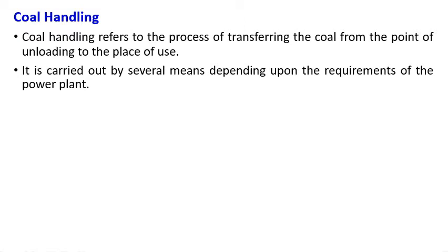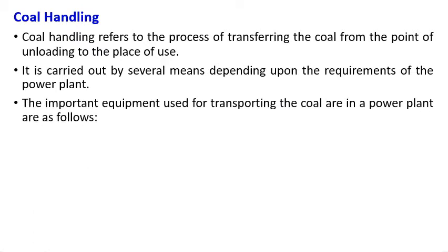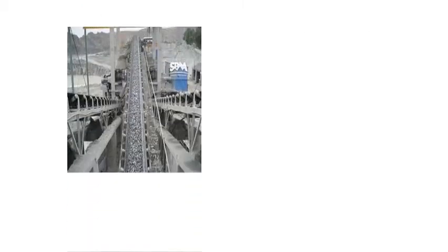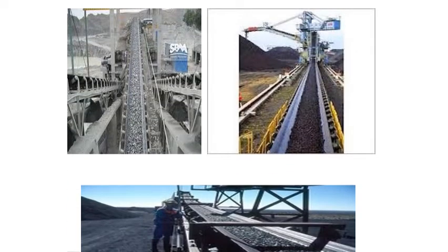The coal may be obtained from within the country or from across the globe — from some other country, shipped to the plant. So it may require shipping arrangements or railway tracks. If it is within the state, a railway track is used; if it is imported coal, certain shipping arrangements are needed. The equipment used for transporting coal includes belt conveyors, screw conveyors, bucket elevators, and grab bucket elevators.